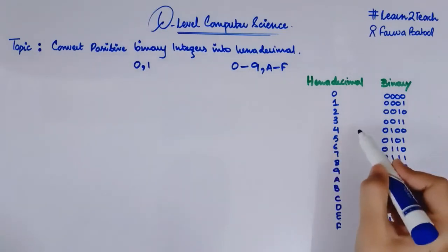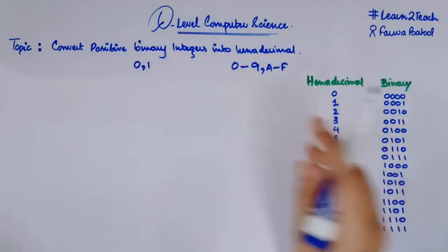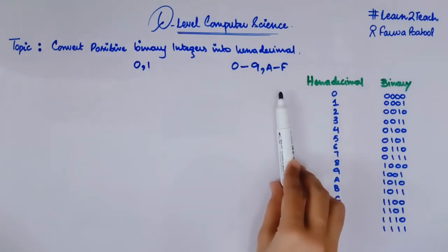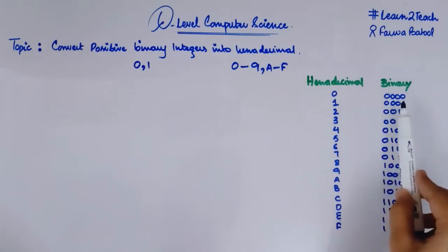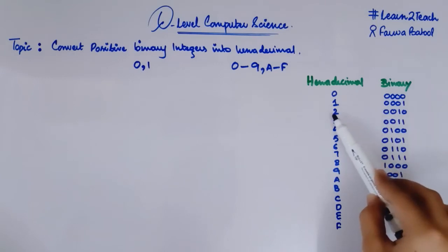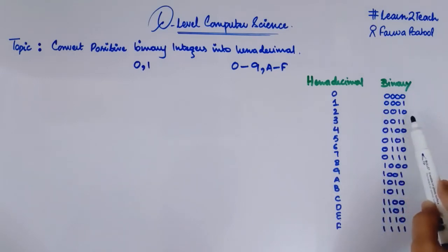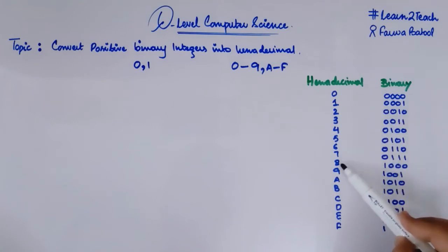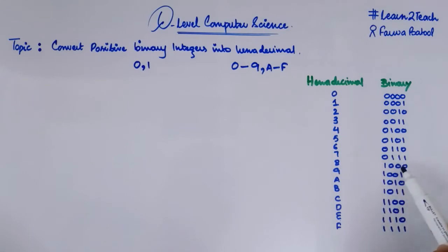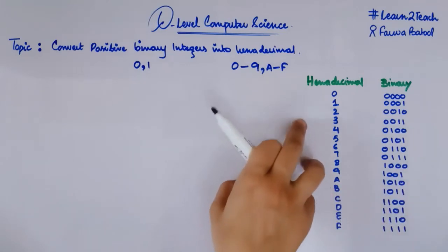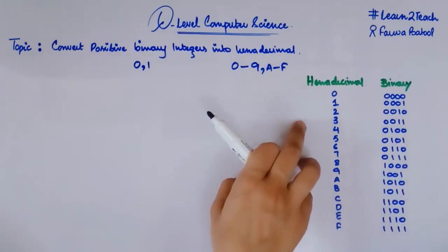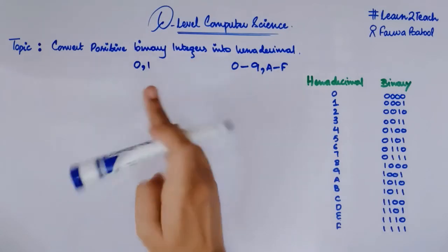For this conversion, the most important thing is this conversion table. It tells you what a hexadecimal digit represents in binary form. For example, the value of 2 in binary is 0010, and the value of 8 in binary is 1000. This is the conversion table required to do this conversion.